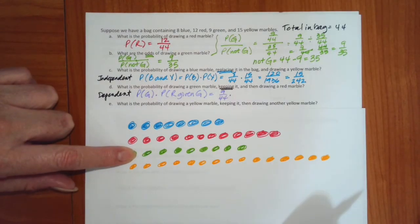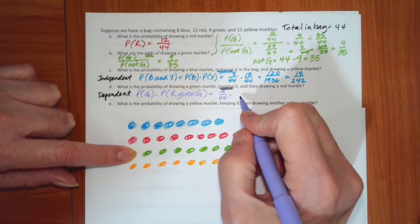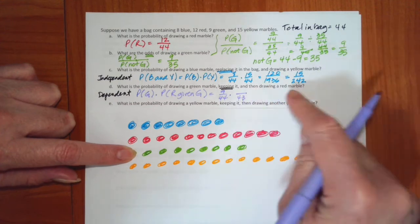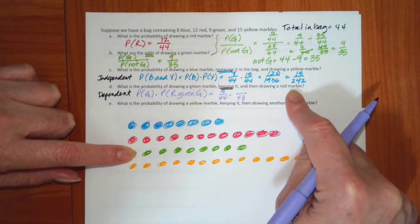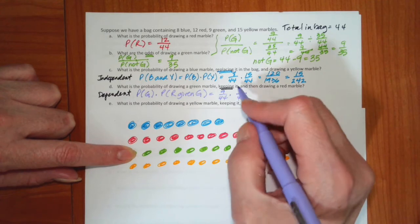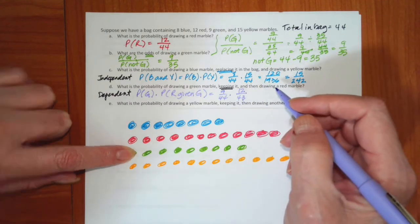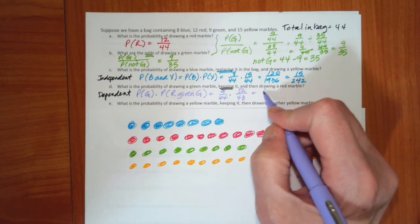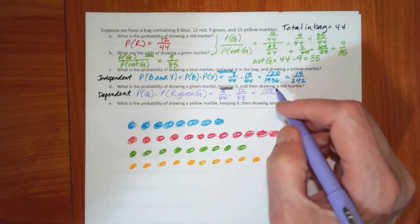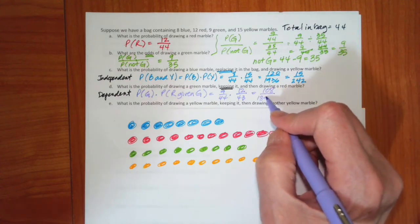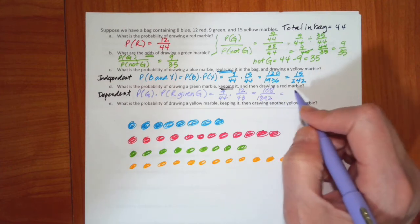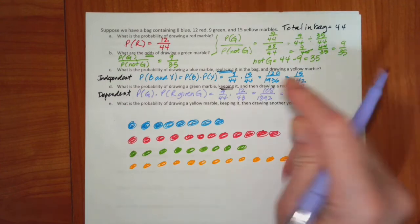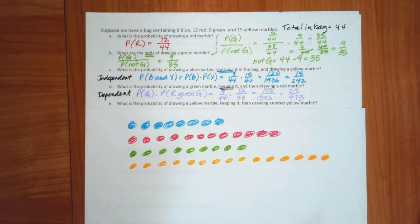But now one of the greens is gone. So we no longer have 44 marbles. We only have 43. And the probability of drawing a red, there are still 12 reds in there. So if I do my multiplication, that's 108 divided by 1892, which becomes 27 over 473. And again, either one of those answers will be fine on the test.